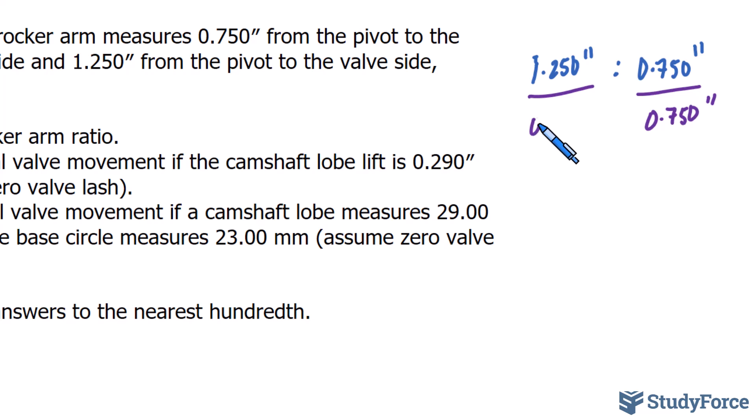So if we divide both sides by 0.750, this and this will cancel out. And on the left side, we will simply divide those two values.